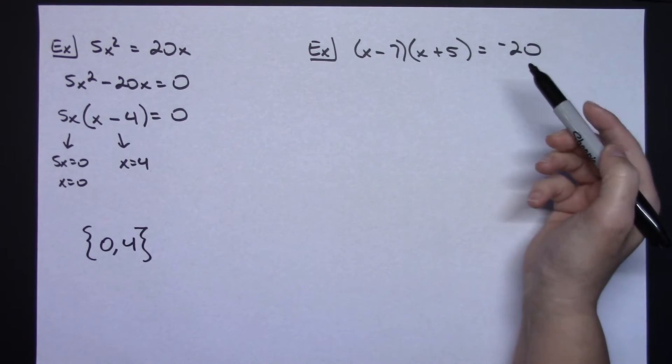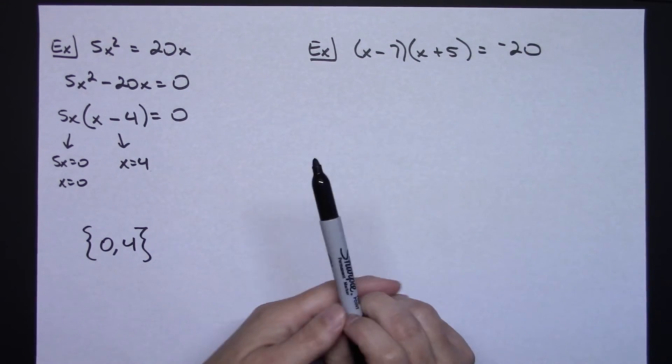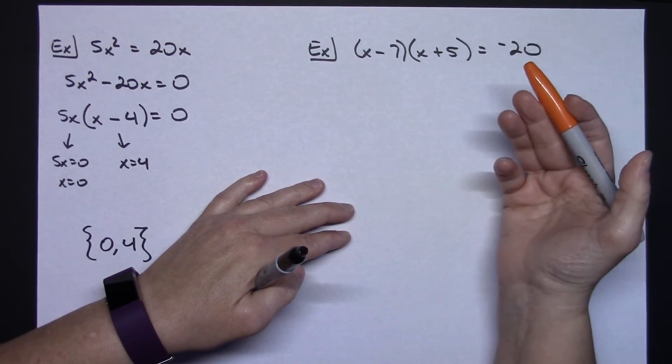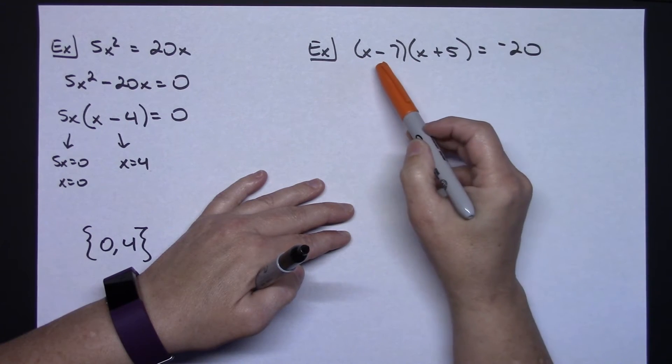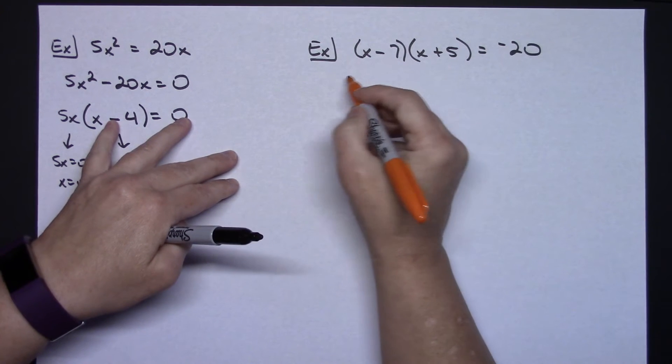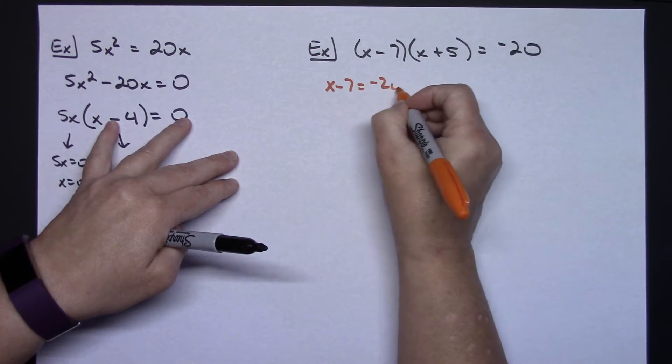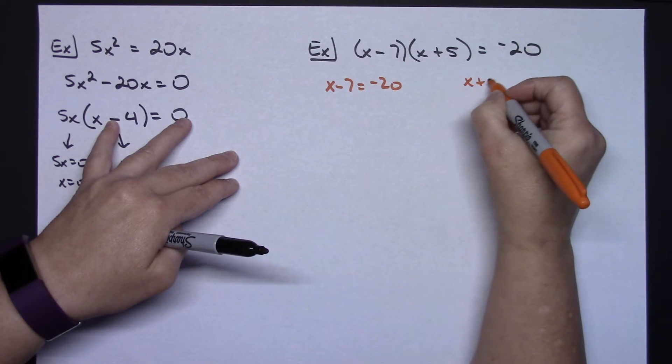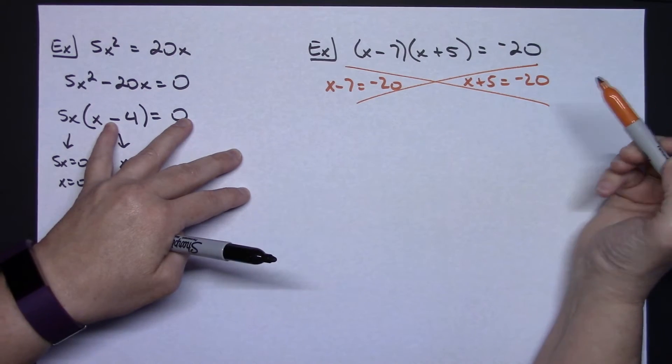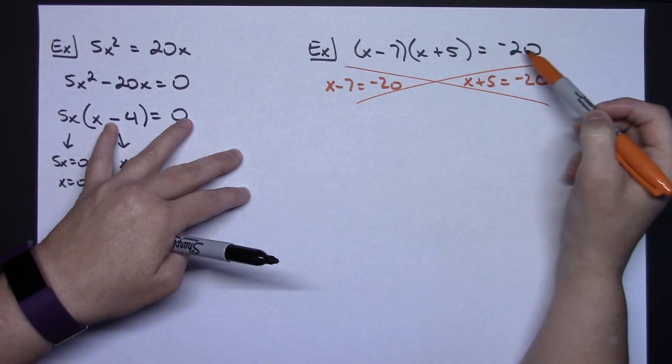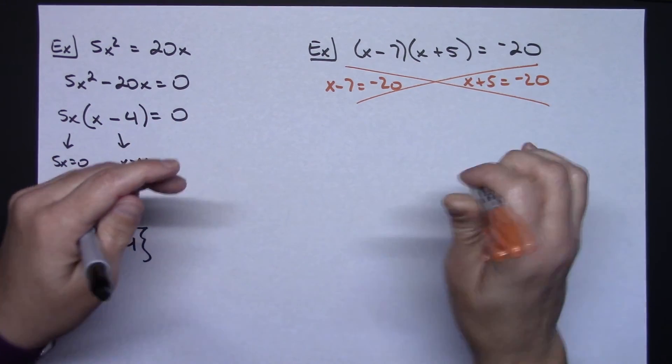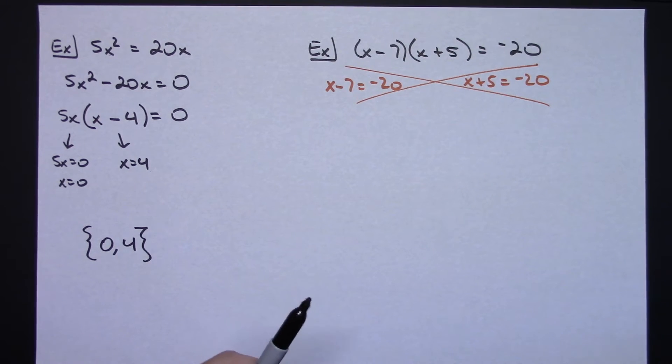Now on this last one, the number one common mistake is people forget that it's the 0 product rule. And they try, here's a product and here's a number over here. So I see a lot of students take this x minus 7 and try to set it equal to the negative 20. And x plus 5 and try to set it equal to that negative 20. That does not work because this is not the 0 product rule because this is not 0.